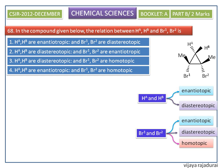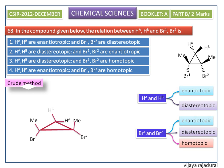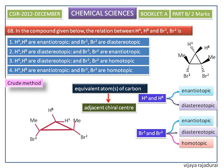This is the structure of the given compound. Using a crude method, we can identify enantiotopic and diastereotopic protons. First, we look at diastereotopic: equivalent atoms on a carbon having an adjacent chiral center are said to be diastereotopic.